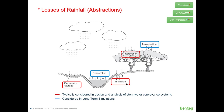Do we always need to take abstractions into account? Not always. When analyzing a storm event lasting only a few minutes or hours, you typically account for interception, infiltration, and depression storage. But if you're analyzing catchment response over days, months, or years — a long-term simulation — you consider all the losses.